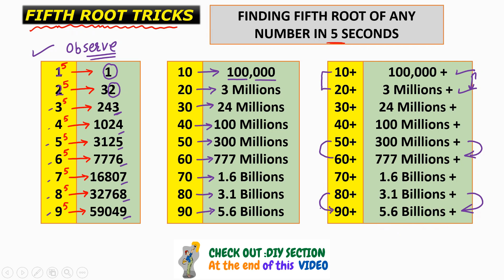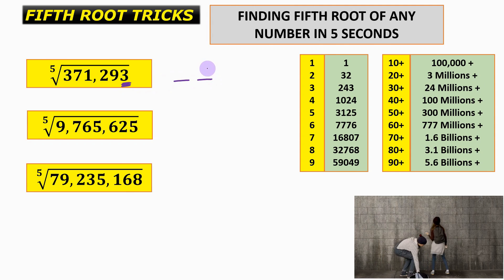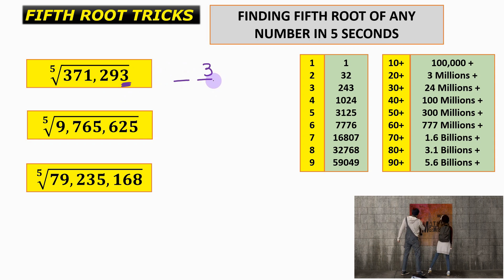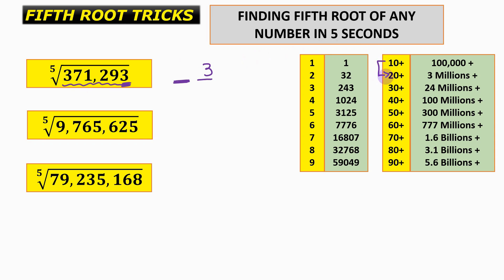Now let us solve some questions to strengthen your understanding. What is the fifth root of 371293? Step 1: observe the unit place. The unit place is 3, so the unit place of the fifth root is 3. Step 2: this number lies between 100,000 and 3 million, so the tens digit is the smaller number, which is 1. Hence the fifth root of 371293 is 13.